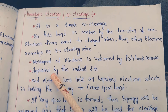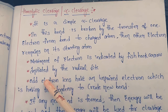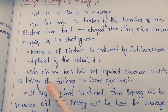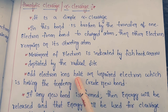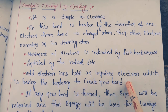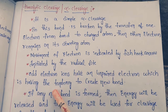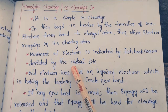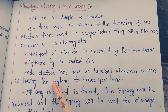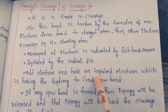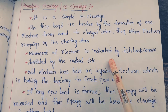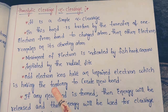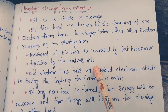Homolytic cleavage is initiated from the radical side. Odd electron ions — that is, ions having unpaired electrons — have the tendency to create new bonds.